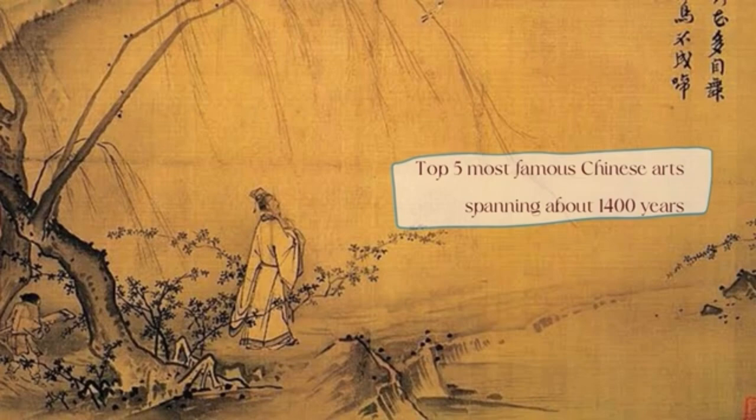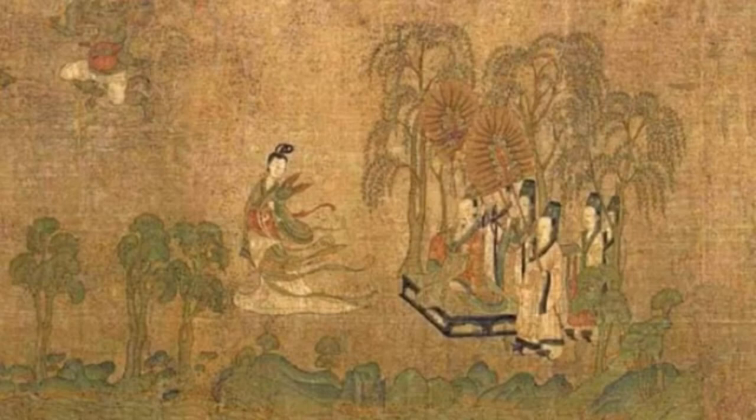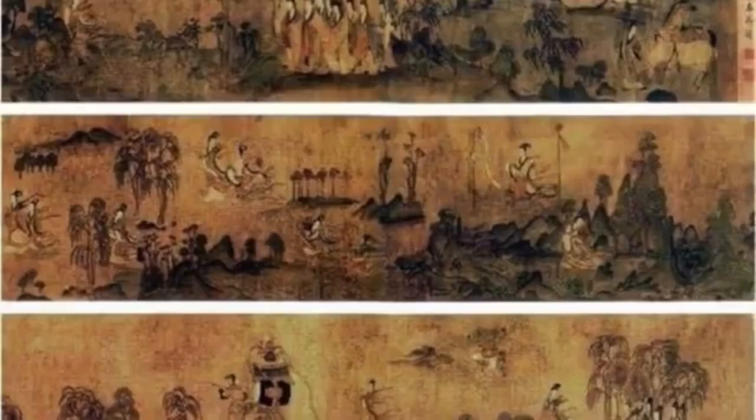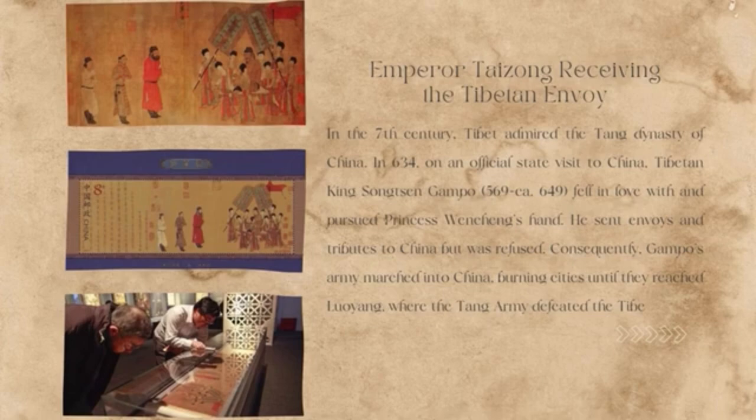The top five most notable and famous Chinese artworks span about 1,400 years. The first is 'The Nymph of the Luo River.' Legend has it that Cao Zhi, a prince of the state of Cao Wei, fell in love with a migrant's daughter, but she married his brother Cao Pi and the prince became dejected. He later composed an emotional poem about the love between a goddess and a mortal. The fourth-century artist Gu Kaizhi was moved by the story and illustrated the poem.